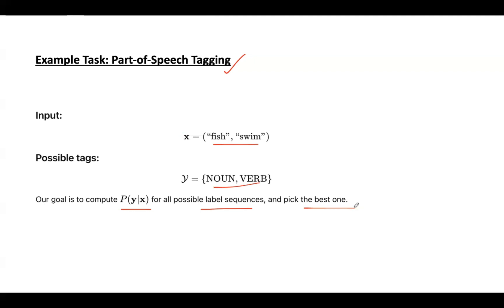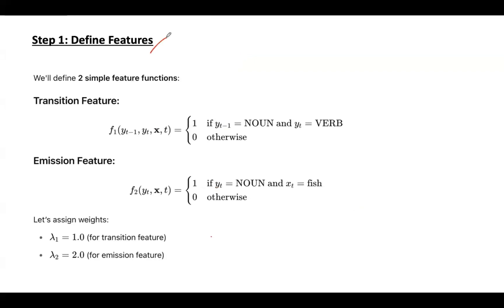Step 1 is define features. Each feature function checks for specific patterns in the input and label sequence and then contributes to the total score of a path. In this example there are two simple binary feature functions, one for transition and one for emission. The transition feature checks if a noun is followed by verb in the label sequence.